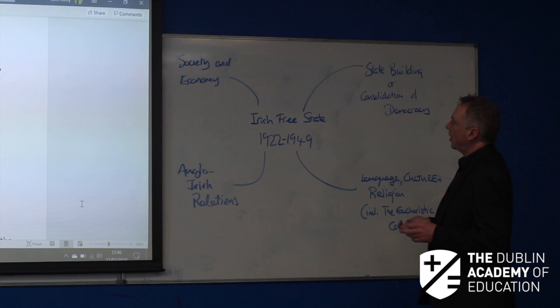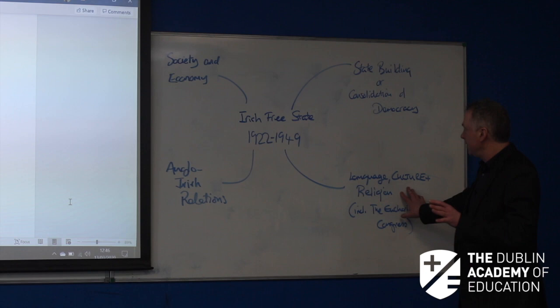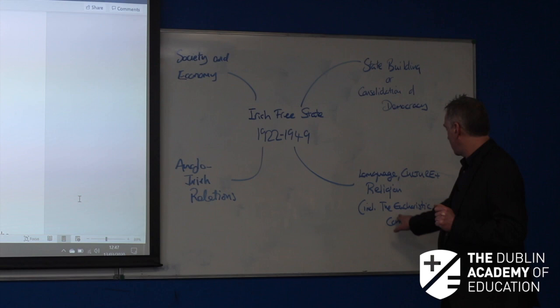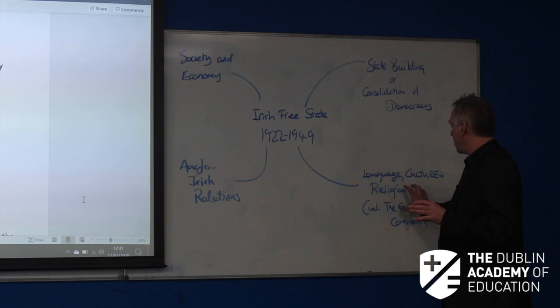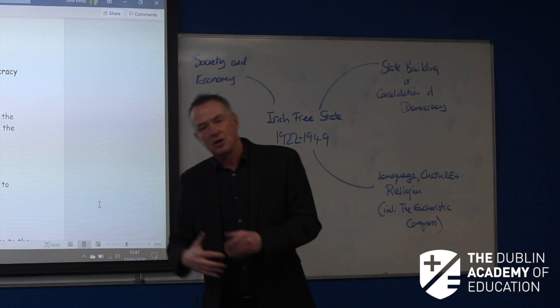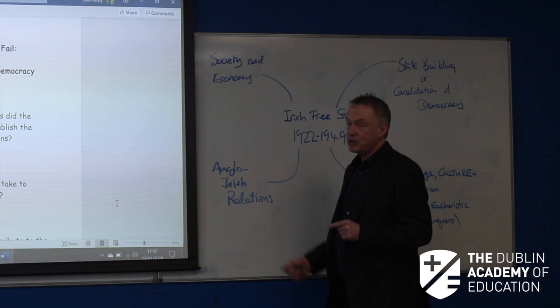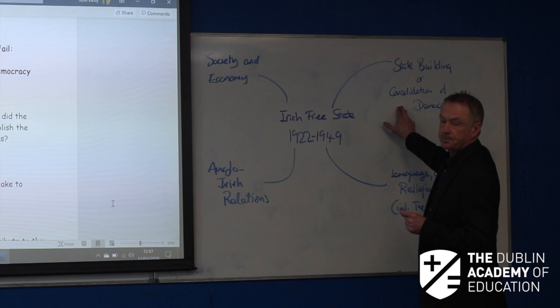We're going to do an essay plan on this one now. Language, culture and religion — this can come up between 1922 and 1949. It's a tricky topic, especially the culture part, but it could include the Eucharistic Congress. Society and economy, 1922 to 1949 — not just economy, but the economy with the implications for society. And of course, everybody's favourite, Anglo-Irish Relations 1922 to 1949. The bad news is it was up last year, but that doesn't mean it's not coming up this year, so we're going to do a plan for this one today.